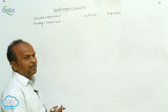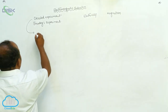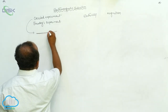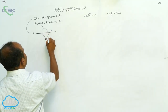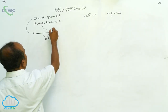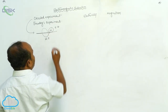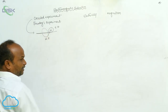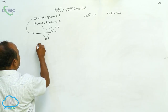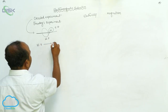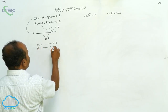What is Oersted's experiment? When the current is passing through a conductor, a magnetic field is produced around the conductor. Current is nothing but electrical energy. So by using the Oersted experiment, we came to know that electrical energy is converted into magnetic energy, or electric field is converted into magnetic field.